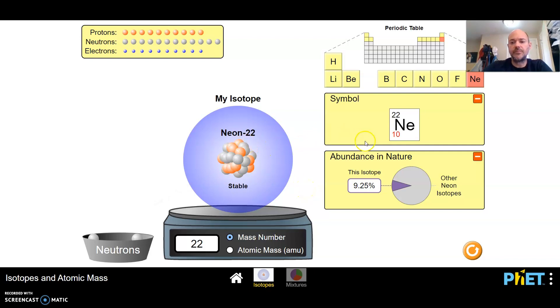Neon 22, also stable, 9.25% of neon isotopes are neon 22. So neon 22, more common than neon 21.